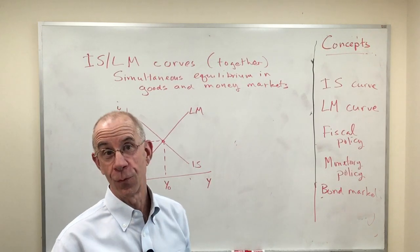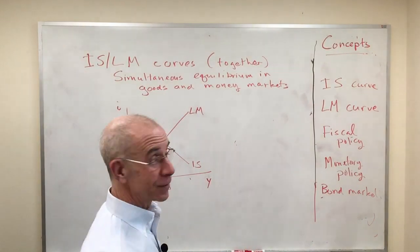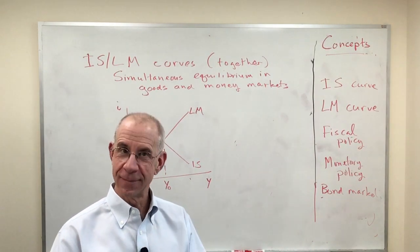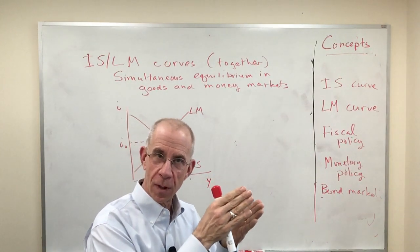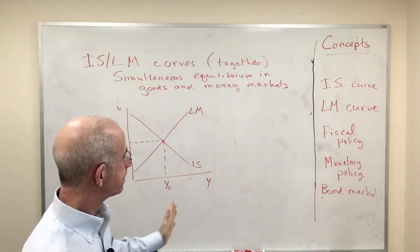And then you have to remember which one of these two things, what the two things represent. LM is where money supply equals money demand. IS where goods market in equilibrium.